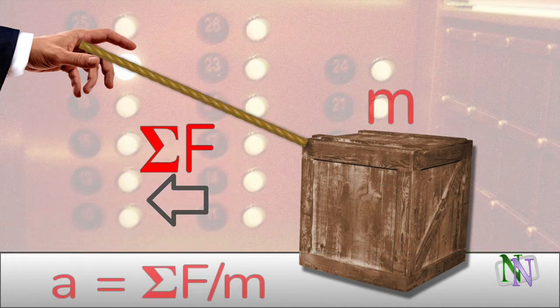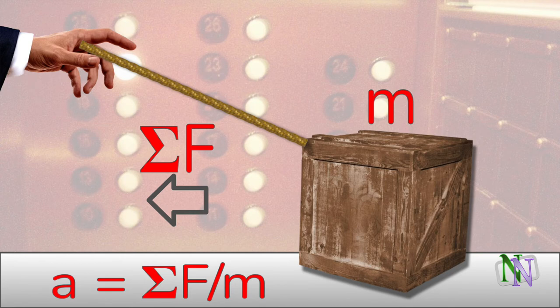If we know the mass of the crate, we can calculate its acceleration by rearranging the formula F equals MA.